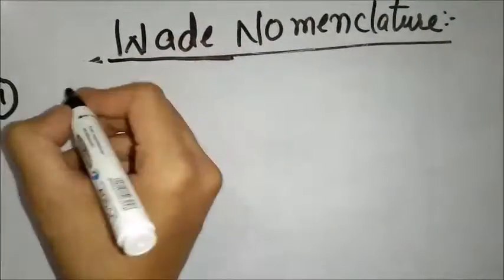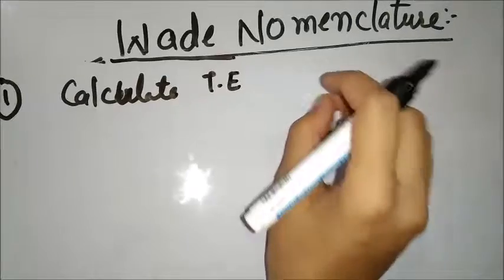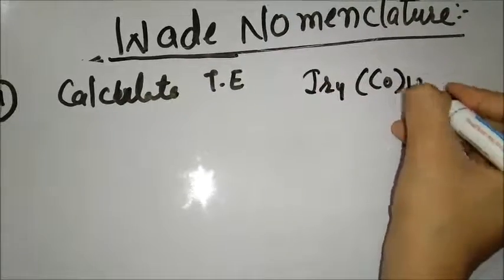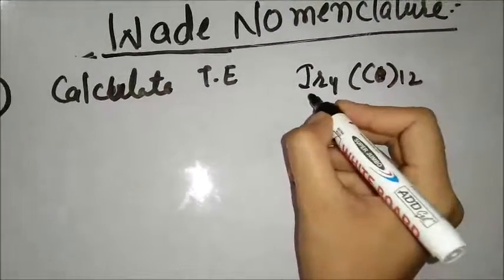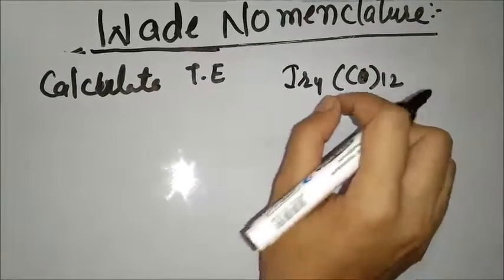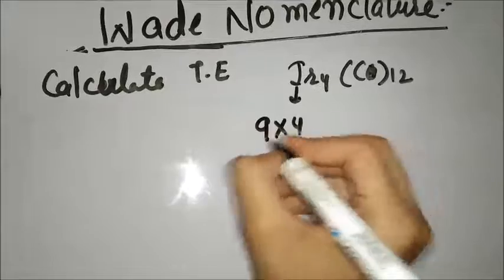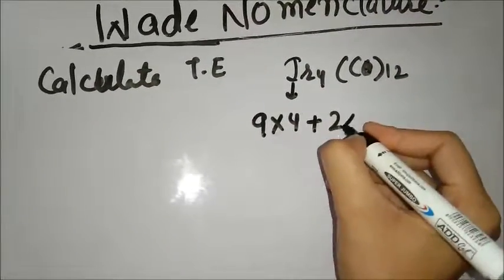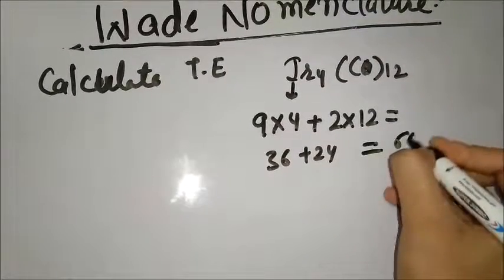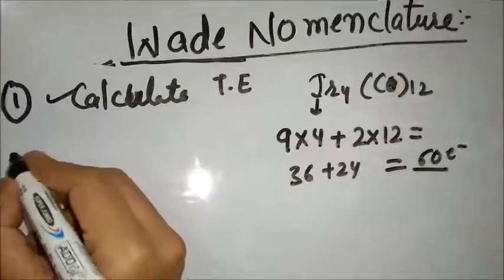The first step to calculate the Wade nomenclature is to calculate the total number of electrons in the given structure. For example, we are given Ir₄(CO)₁₂. One Ir will give the valence electrons 9, and four are present, plus one CO will give you two electrons into 12. So this comes out to be 36 plus 24, which totals 60 electrons. So our first step is completed: calculate total electrons.